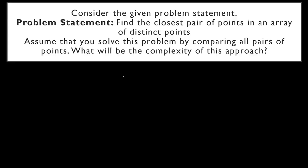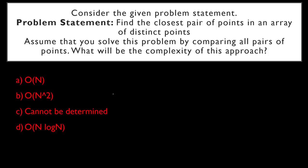The first question says: Consider the given problem statement. Find the closest pair of points in an array of distinct points. Assume that you will solve this problem by comparing all pairs of points. What will be the complexity of this approach? Option A is O(N), option B is O(N²), option C is cannot be determined, and option D is O(N log N). We need to understand the problem statement before analyzing the complexity.